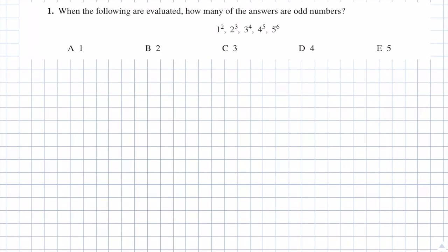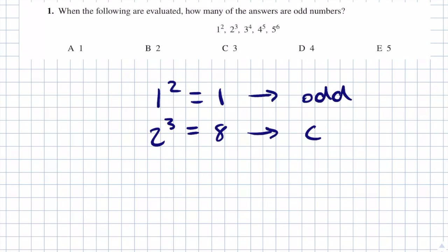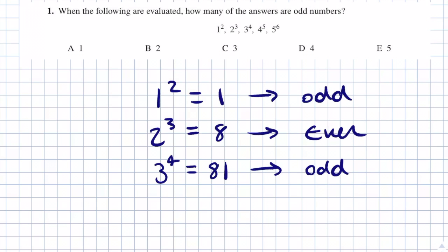First of all, we know 1 squared is 1, which is odd. We know 2 cubed is 8, which is even. When we get to 3 to the power 4, you could work it out: 3 times 3 is 9, 9 times 3 is 27, and 27 times 3 is 81, which is odd. But a better and quicker way is to note that if you have an odd number times an odd number, it gives you an odd number. No matter how many odd numbers you multiply together, the result is always odd. An odd number raised to any power is always going to be odd.